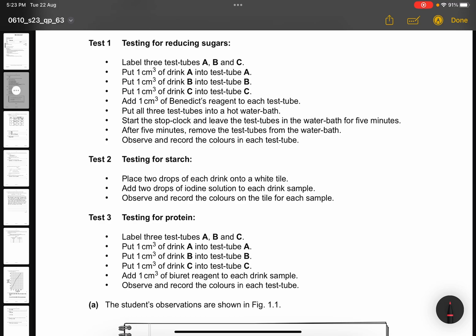So for testing of starch, it's similar, but it's now placing 2 drops of each drink into a white tile and add 2 drops of iodine solution and observe and record the color. For test 3, it's protein, same steps as reducing sugar, but you're adding a biuret reagent to each drink sample and observing and recording the colors in each test tube.